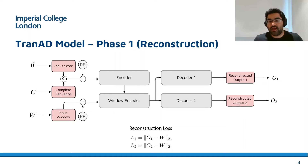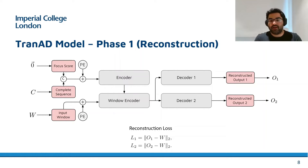Both decoders are trained using mean square error with the input window W as the loss function to update the parameters of the neural network, which is referred to as the reconstruction loss in the paper.